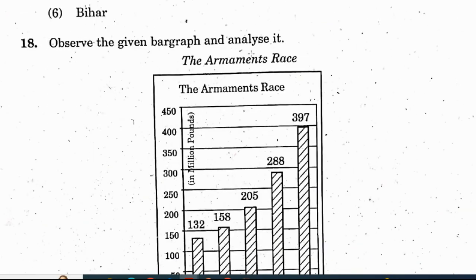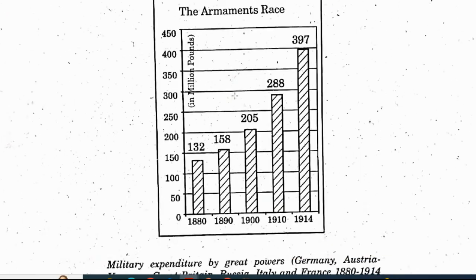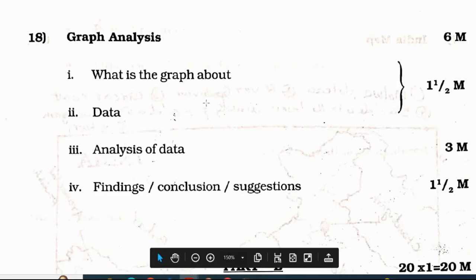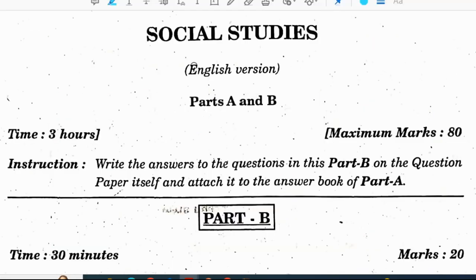Question 18: observe the given bar graph and analyze it. Marking scheme: what is the graph about and data — 1 mark; analysis of data — 3 marks; finding, conclusion, suggestion — 1 mark. Total 6 marks.